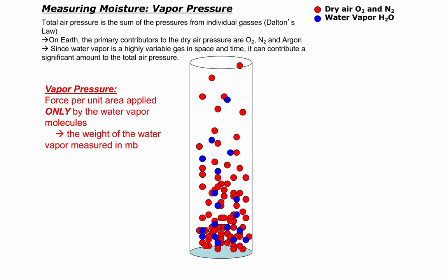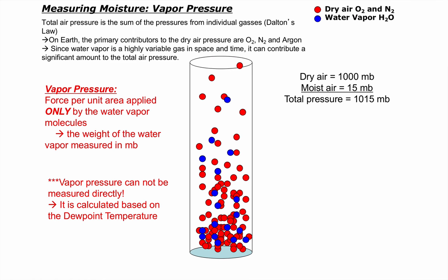The term we're going to go after here is vapor pressure. Vapor pressure is just the force per unit area applied by the water vapor molecules only. If the total air pressure is 1,015 millibars, 1,000 of those millibars came from the dry air and 15 came from the water vapor. I want to know how to get that number 15. To do that, I've got to do a proxy measurement. I'm going to measure the dew point temperature, which is directly related to vapor pressure.